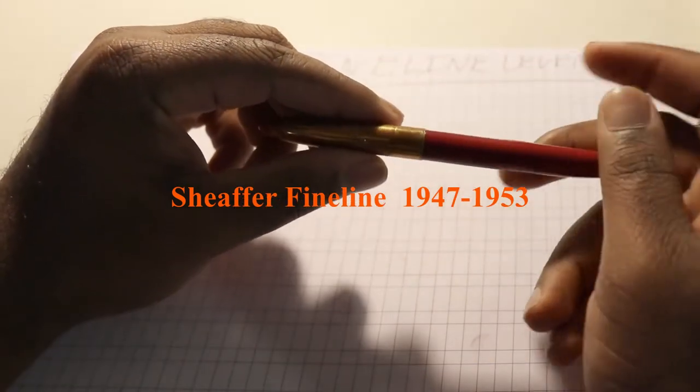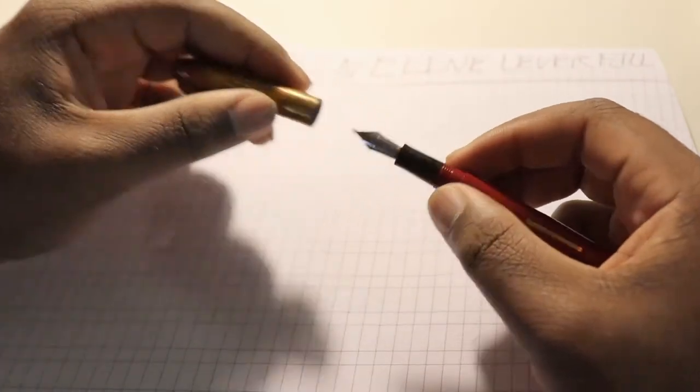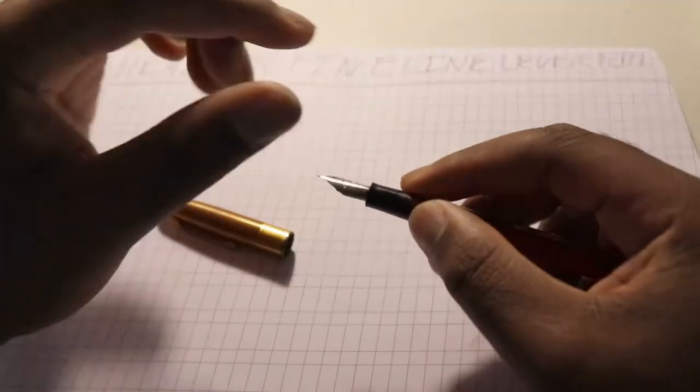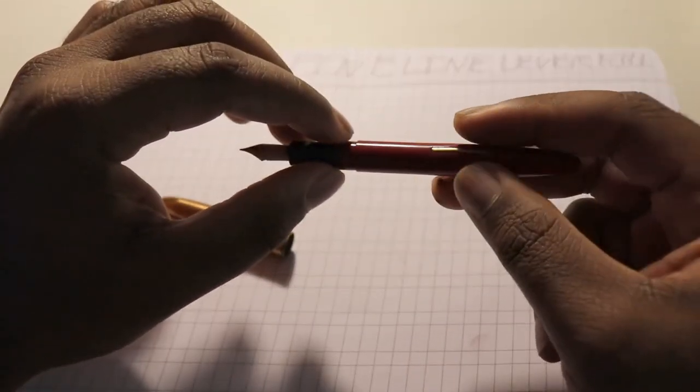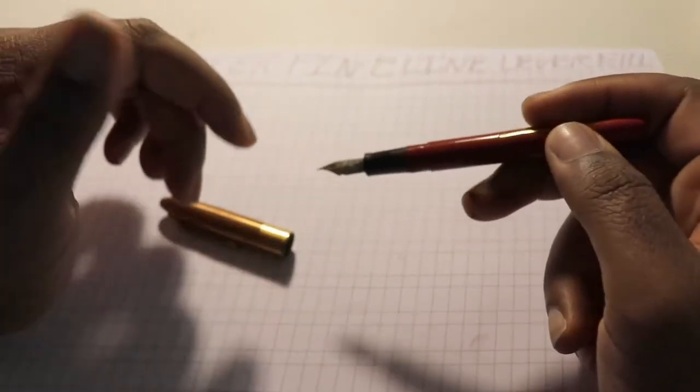The interesting thing about the Schaefer Fineline series is that you can unscrew the nib. You just would twist the nib right, and you could completely unscrew it from the section. And the whole premise of this was to be able to allow the users to switch out the nibs really fast.